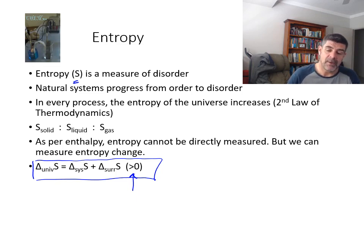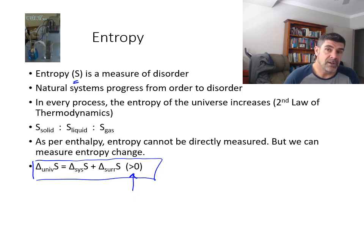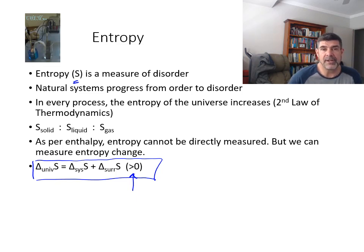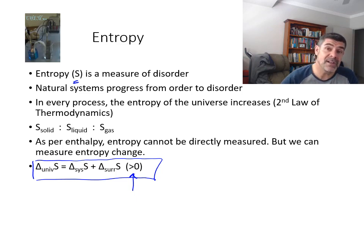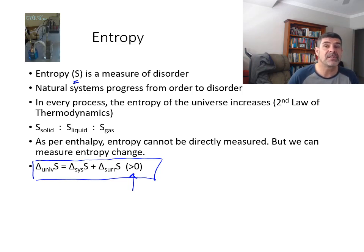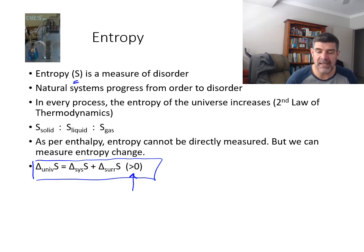So in every process, the entropy of the universe increases. This is known as the second law of thermodynamics — or 'you can't break even,' or 'there's no such thing as a free lunch.' Something has to go somewhere, and that something is the entropy of the universe.